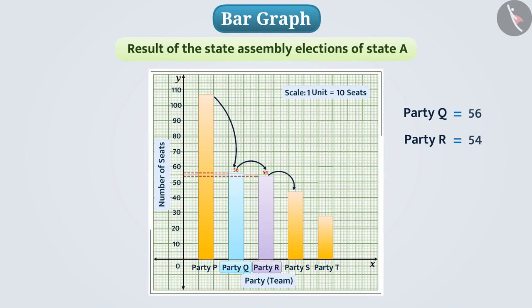The comparison of data becomes easy with the help of bar graph. As the maximum length bar has been drawn for party P, here we can say that party P has won the most seats.